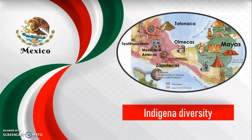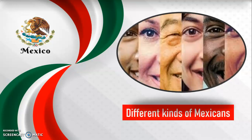Just take a look at the indigenous diversity that we have. We belong to different cultures like the Olmecs, the Mayas, the Zapotecs, and there are different cultures that are part of our background. There are also different kinds of Mexicans from different races and different skin colors.